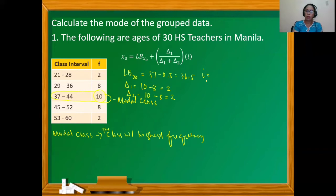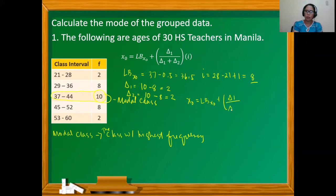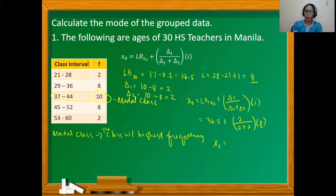The class size i is calculated as the upper limit minus the lower limit plus 1. Using the first class: 28 minus 21 plus 1 equals 8. Substituting into the formula: mode equals 36.5 plus (2 over 2 plus 2) times 8, which gives us 36.5 plus one-half of 8, or 4. So the grouped mode equals 40.5 years old.